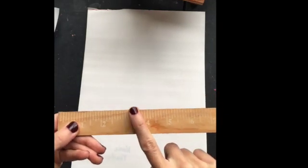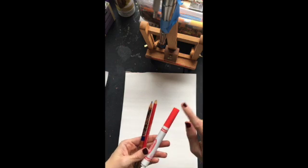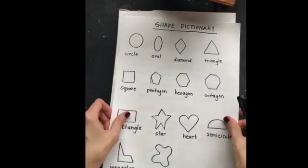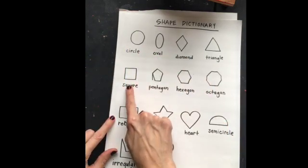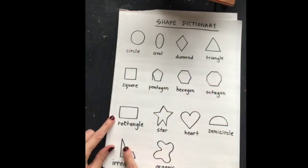Why do we use a pencil instead of a marker? That's right so we can erase. You'll also need a ruler. If you don't have a ruler you can use a flat edge of an envelope or a piece of paper.